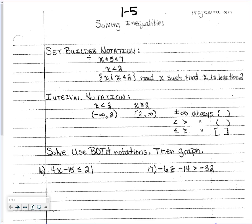Lesson 1-5: solving inequalities. You guys already know most of this — instead of an equal sign it's going to be that alligator sign, the less than or greater than. So with something like x plus five is less than seven, just like if it said equals seven you'd subtract five from both sides, you do the same thing here and get x is less than two.